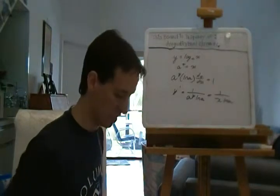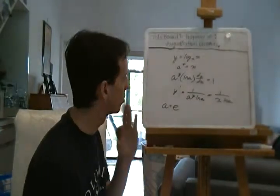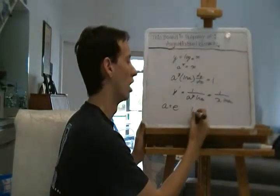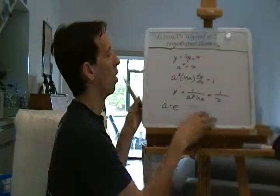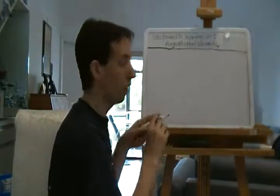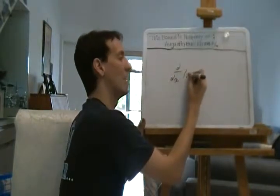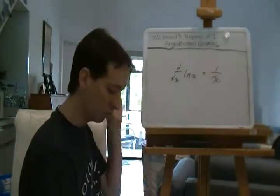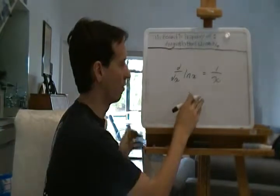In a very special case, if you choose a to equal e — which we will almost always do in this course — then the natural log of a is 1. So we get another, probably more important, formula: the derivative of the natural logarithm is 1 over x. You can also write it as x to the negative 1.